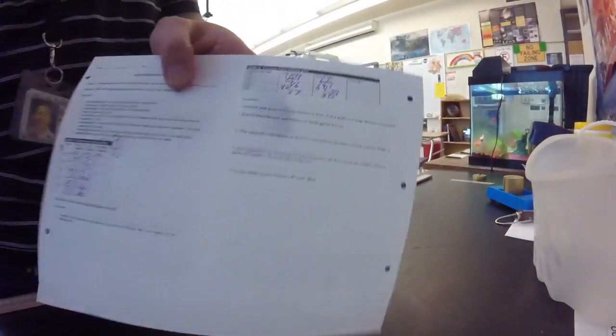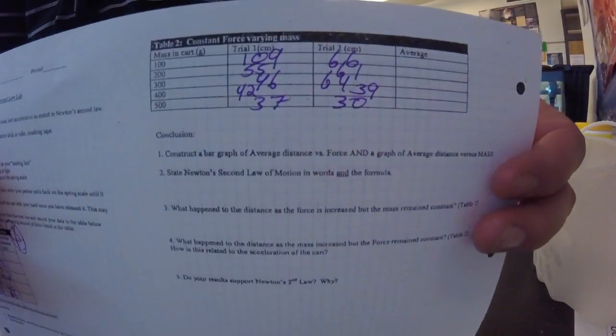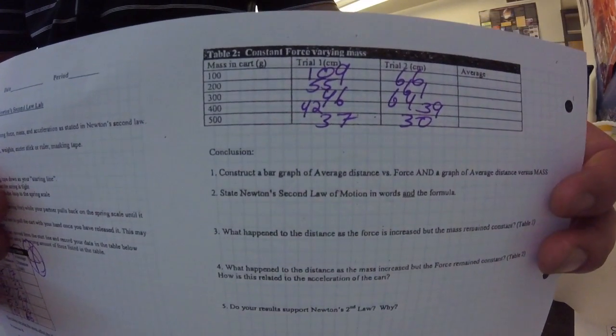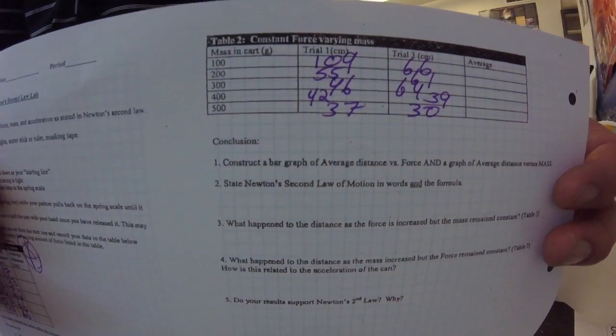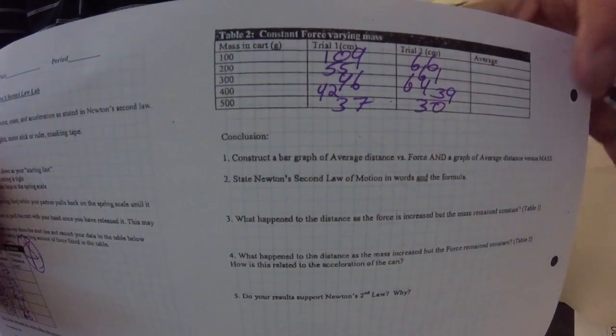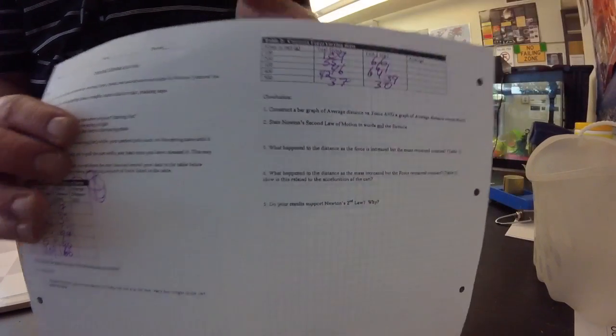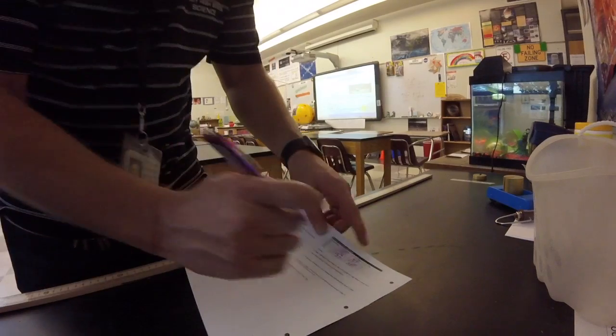I'm done collecting my data. I want to show you what this last data table looks like up close. You'll still need to find the averages. Remember, add up these two data points, divide by two to get your averages, and don't forget that you will be graphing your averages.